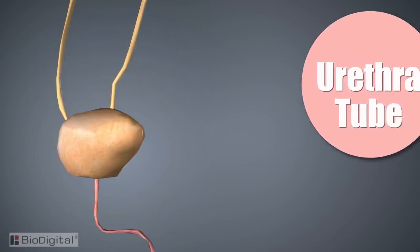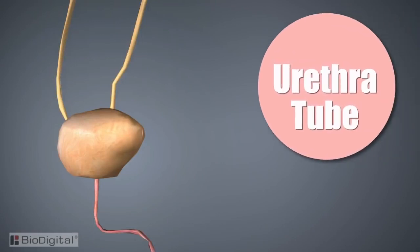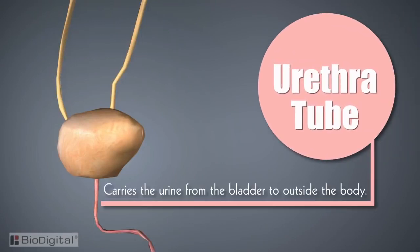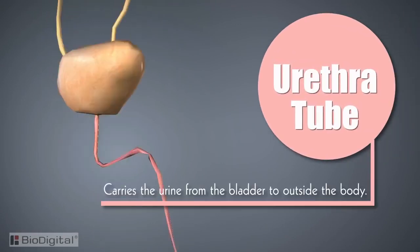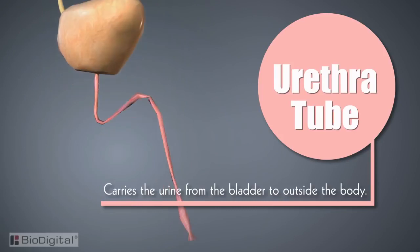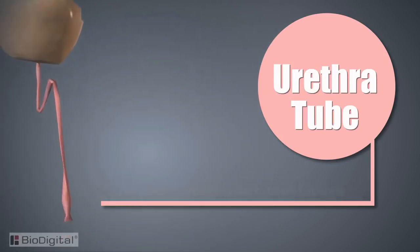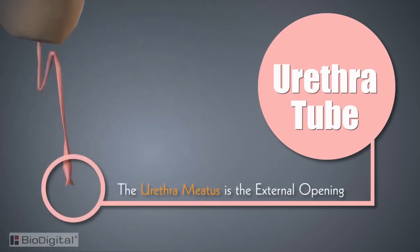Leading from the bladder is the urethra tube, whose job is to carry urine from the bladder to the outside of the body. The last structure in the urinary pathway for purging toxins from the body is the external opening to the urethra, called the urethral meatus.